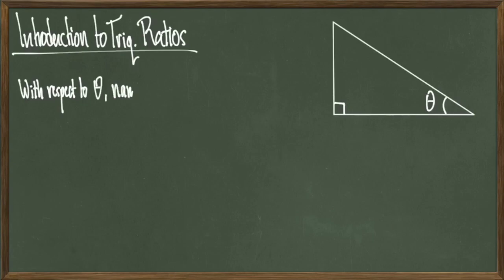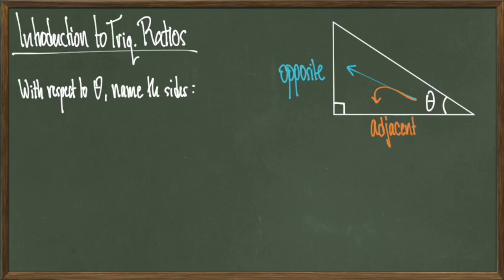The side of the triangle that sits opposite to theta is just called the opposite. The side that sits next to theta is called the adjacent side, and then the longest side of the triangle is still called the hypotenuse. Every time we refer to one of these three sides, we're referring to the length of that side.